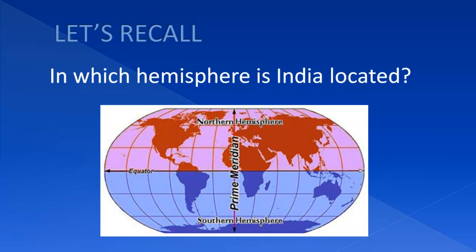In which hemisphere is India located? To determine this, we need a world map. The circle on the map shows India. Thus we can say that India is located in the Northern Hemisphere.